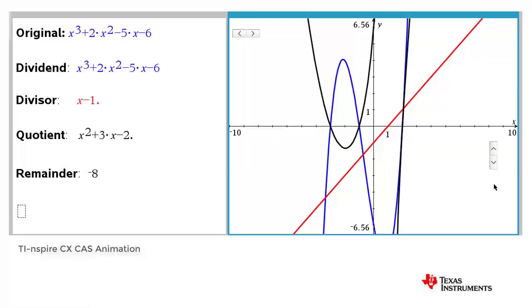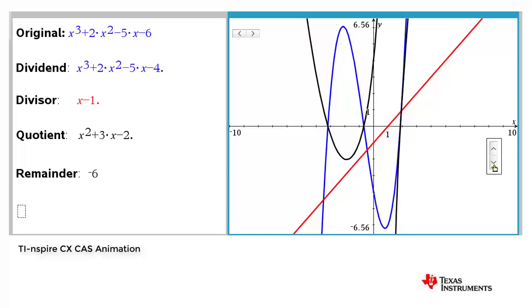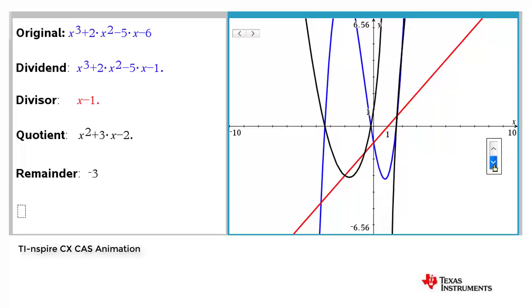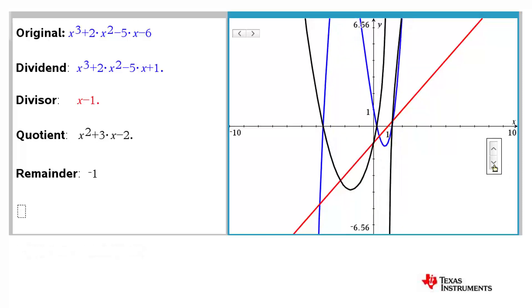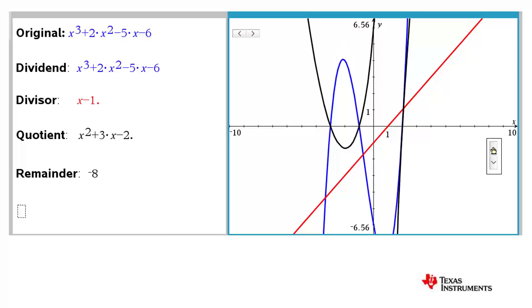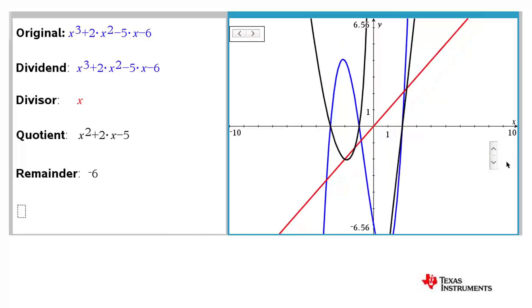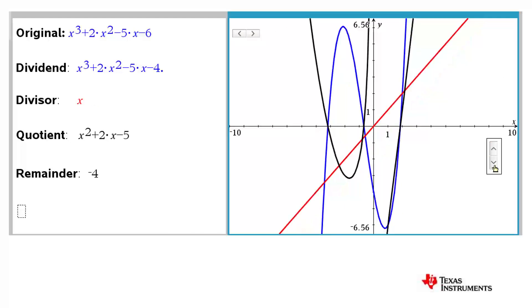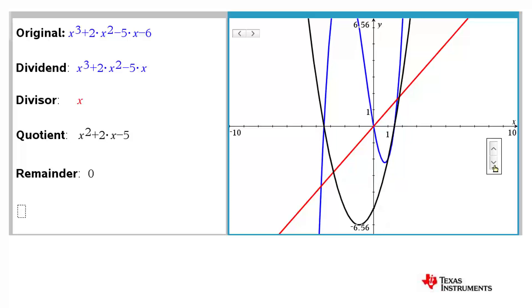The same is true for polynomials. The remainder that we see tells us how far off our polynomial is from being a multiple of our divisor. So, the value for f actually tells us the remainder. And also how we could change our original polynomial so that our divisor is a factor.